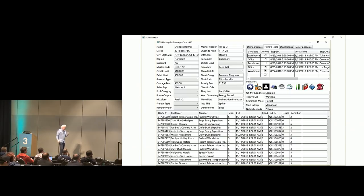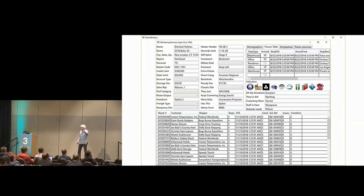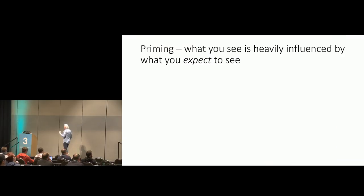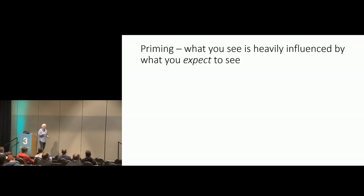In addition to the way the visual system works, there's a concept called priming — from the example of what tool are you looking for. Priming means that you are heavily influenced by what you expect to see. What you see is, in a sense, an artifact of what you expect to see.